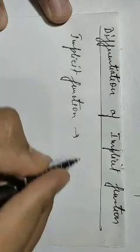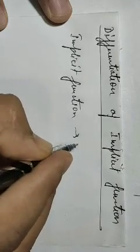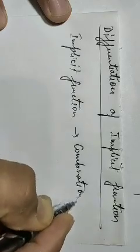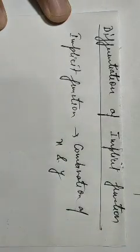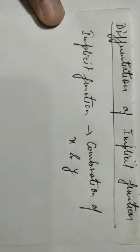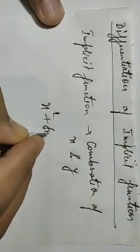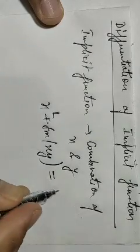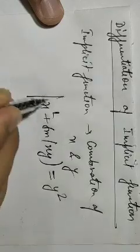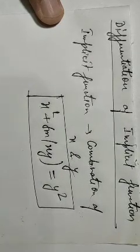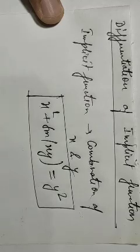An implicit function is a combination of x and y, and we can't separate x and y on both sides. For example, the function x² + sin(xy) = y² is an implicit function. We can't separate x and y separately — we can't keep y on the left side and x on the right side.